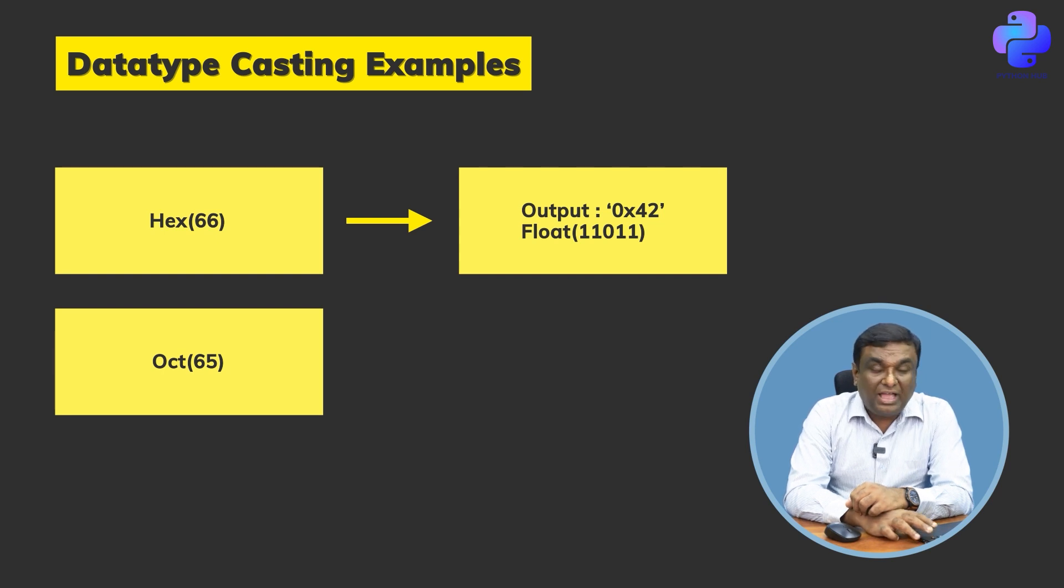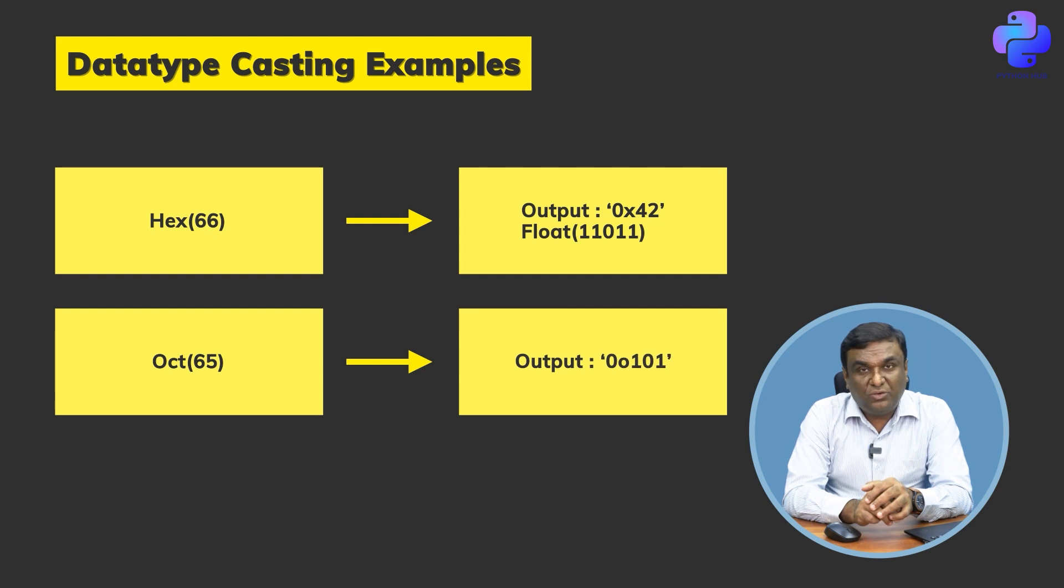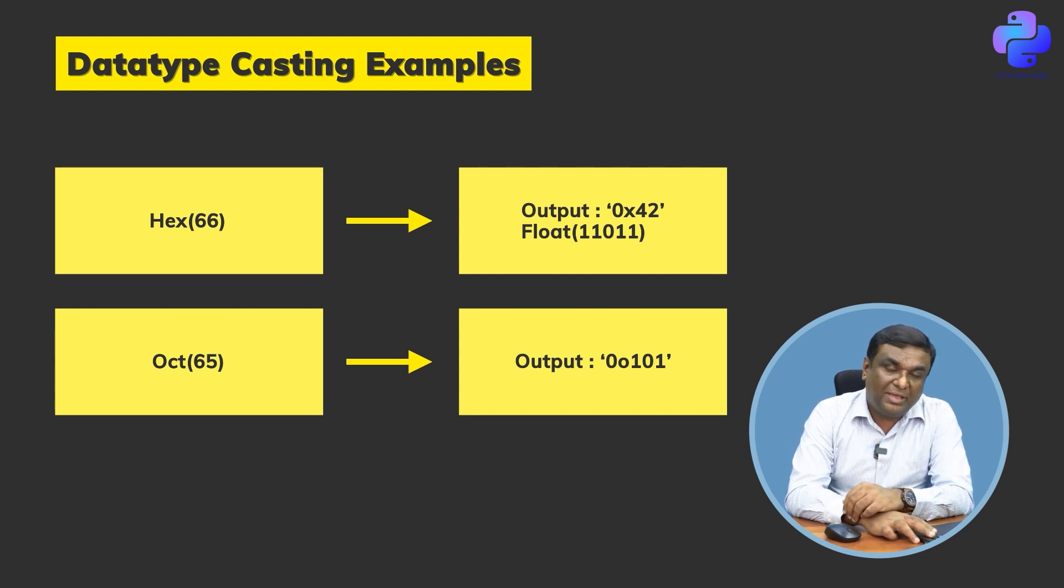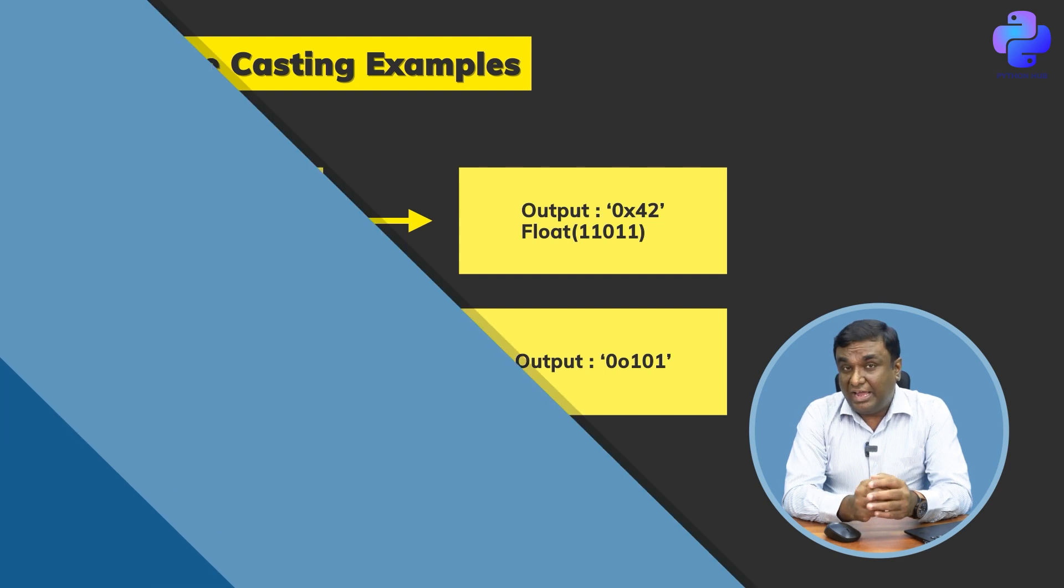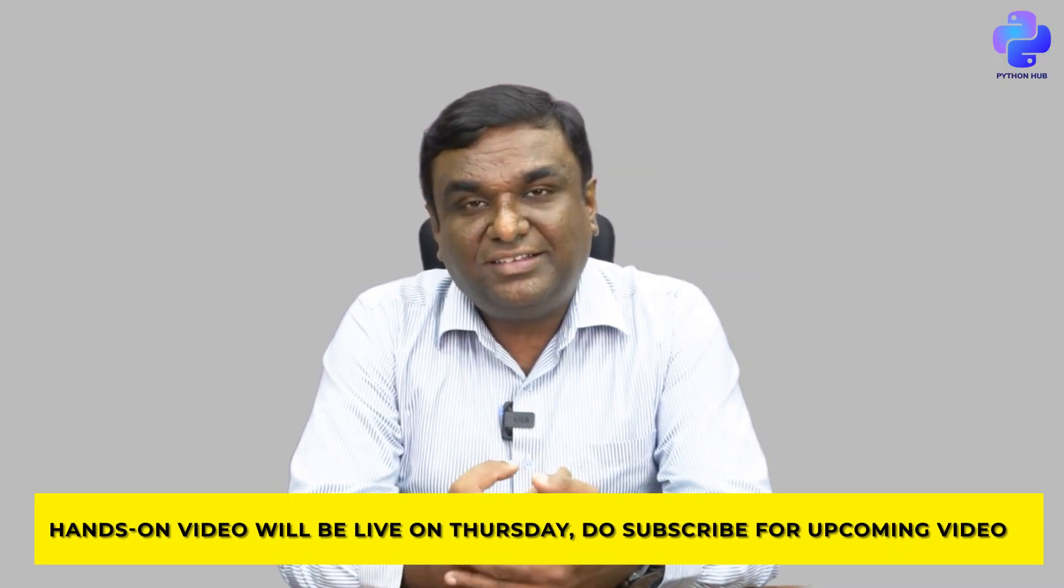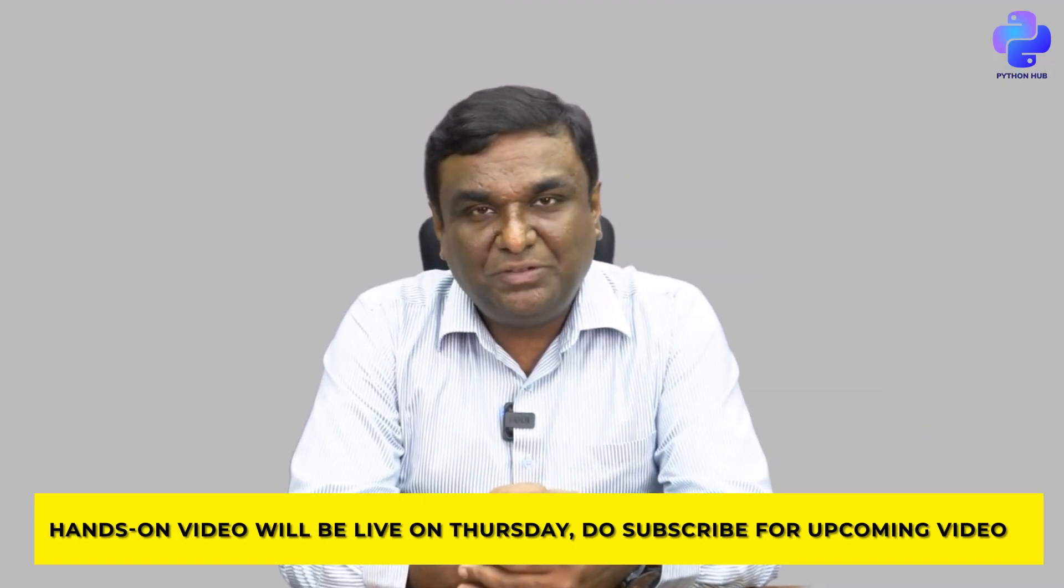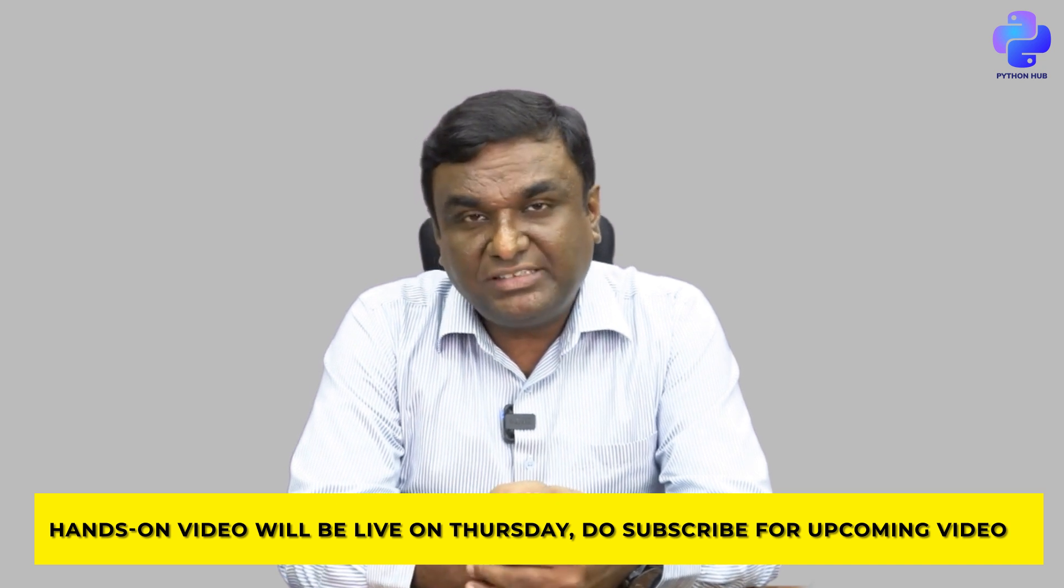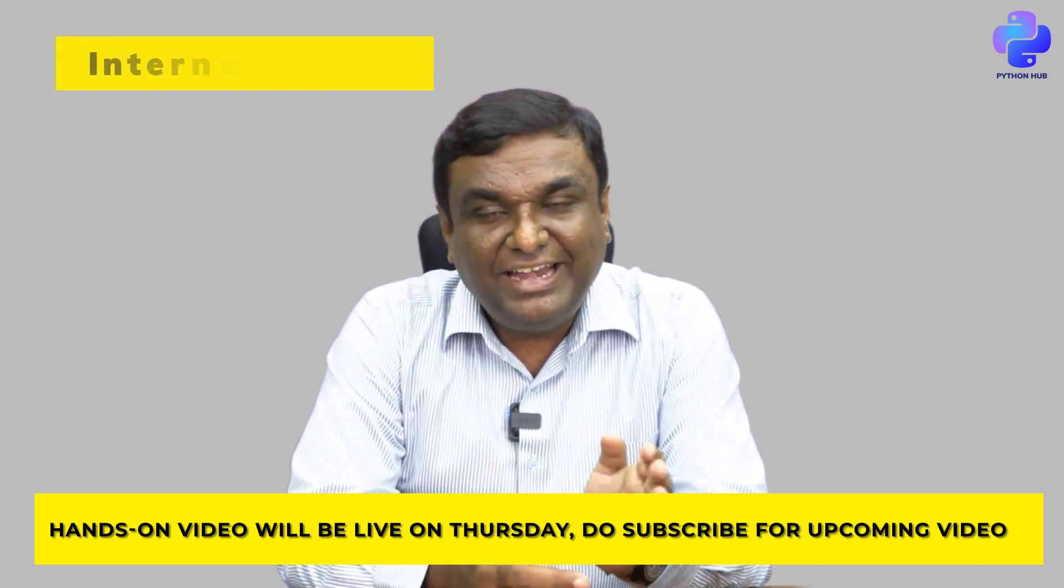Same way, if I use oct() as a function and pass 65 as data to it, I get the output 0o101. If you notice the difference, x was used as a symbol for hex in the previous function. Here it's octal, so I'm using o. So 0o101 is the output I'm getting here.